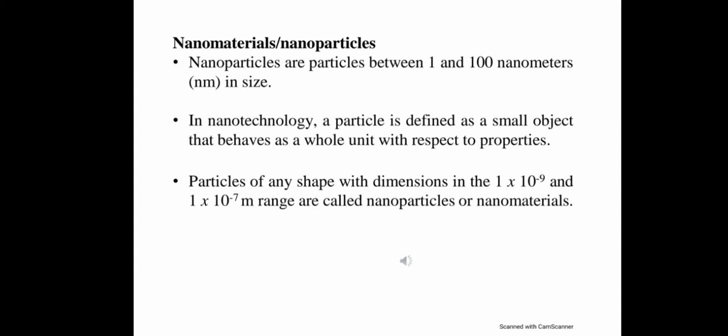The next term is nanomaterials or nanoparticles. Nanoparticles are particles between 1 and 100 nanometers in size. In nanotechnology, a particle is defined as a small object that behaves as a whole unit with respect to its properties. Particles of any shape with dimensions in the 10⁻⁹ to 10⁻⁷ meter range are called nanoparticles or nanomaterials.